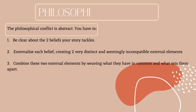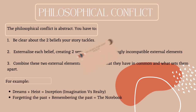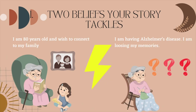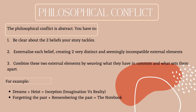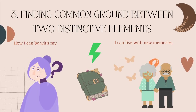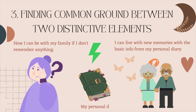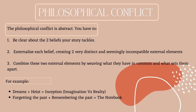Philosophical conflict is abstract in nature. To create your own, keep a few things in mind. Number one: be clear about the two beliefs your story tackles. Number two: externalize each belief, creating two very distinct and seemingly incompatible external elements. Number three: combine these two external elements by weaving what they have in common and what sets them apart. For example, dreams plus a heist equals the movie Inception — two very distinct external elements, fantasy and reality, find their common ground and weave a mind-blowing movie.